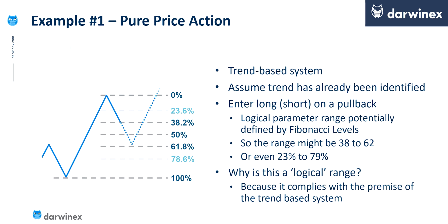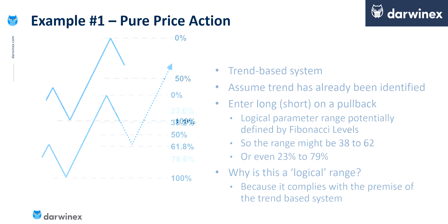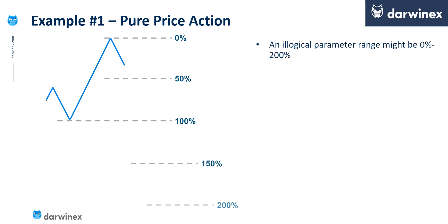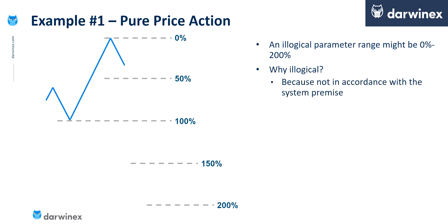The important point is that the reason they're logical and sensible is because they are aligned to the premise of the trading system that we're testing. Now let's look at the converse of this in terms of illogical parameter selection. Let's say that instead of bounding our range by the lower and higher Fib levels, we now just take the approach where we optimize between 0 and 200%. That would be completely illogical for the type of system we're trying to optimize here, because it goes against the system premise, which of course is a trend-based premise.